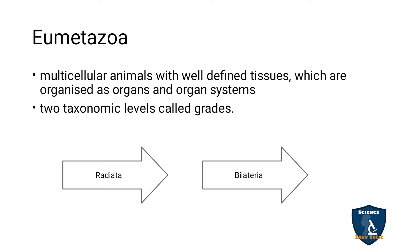Eumetazoa refers to true multicellular animals that form tissues, organs, and organ systems. There are two grades in Eumetazoa — 'Eu' means true multicellular. The two grades are Radiata and Bilateria.